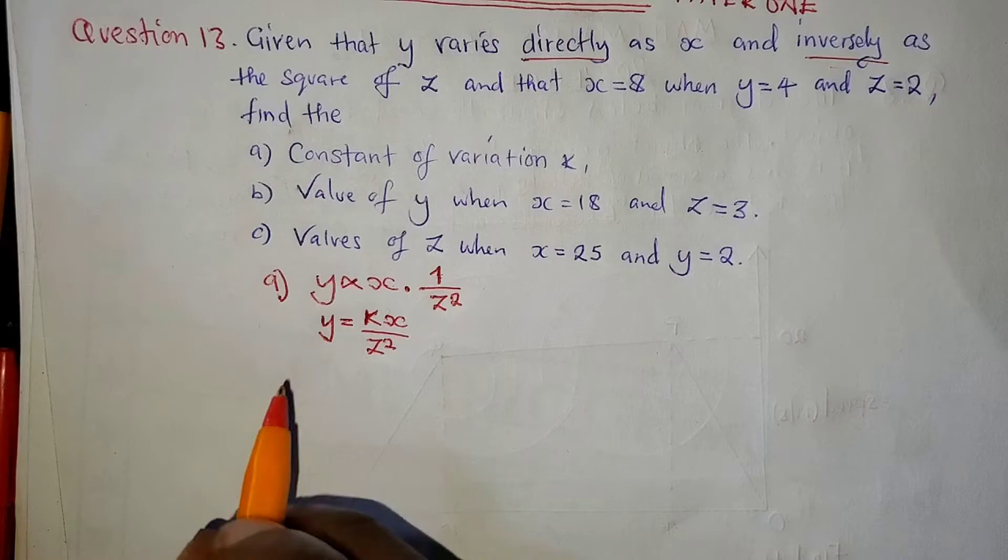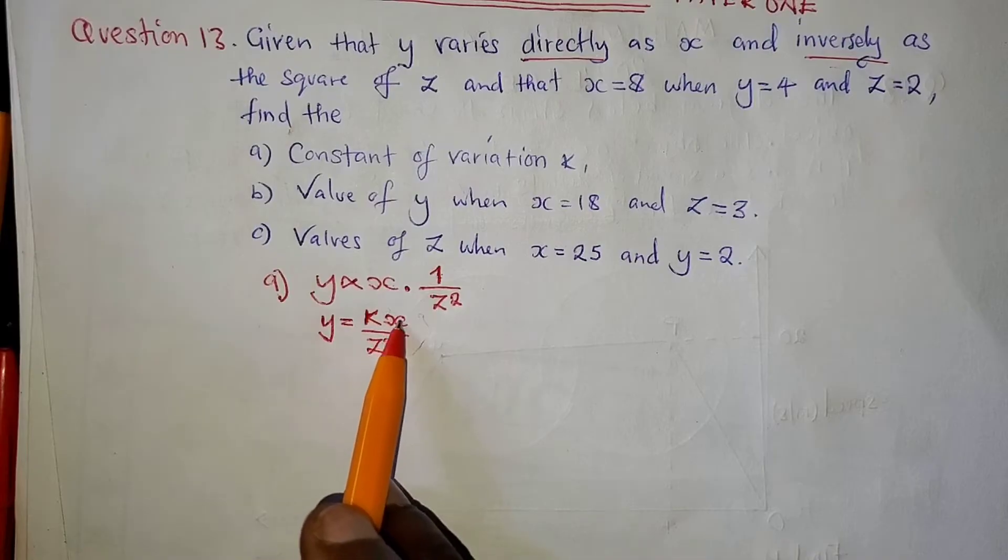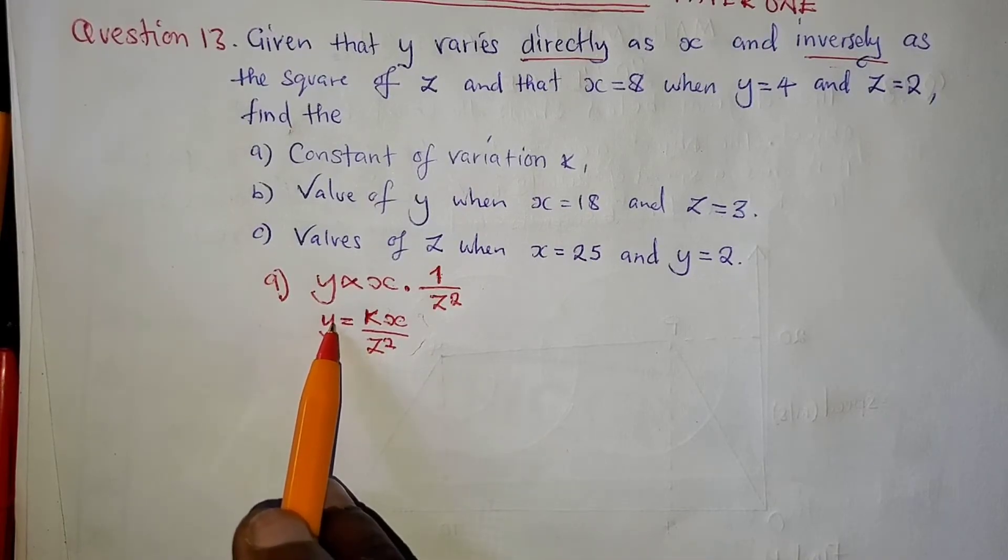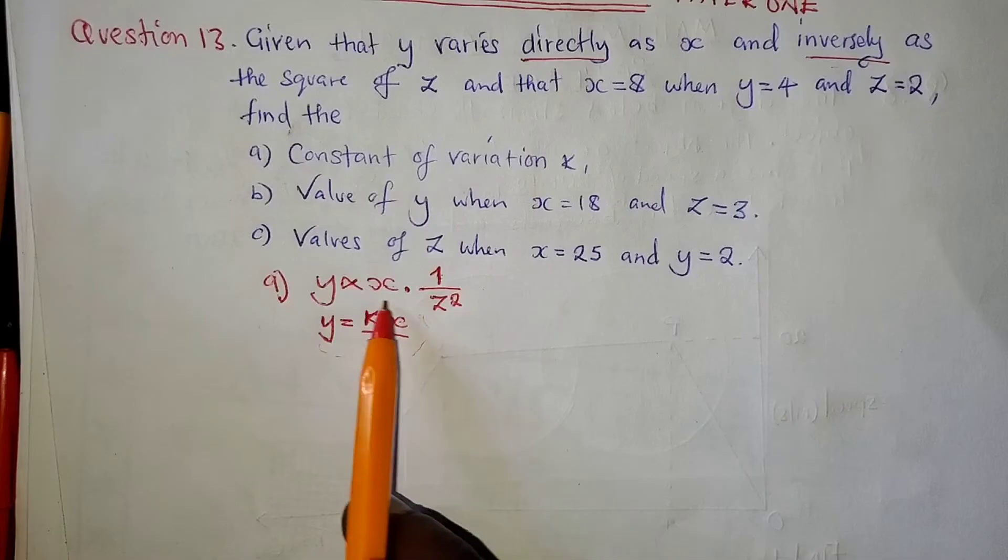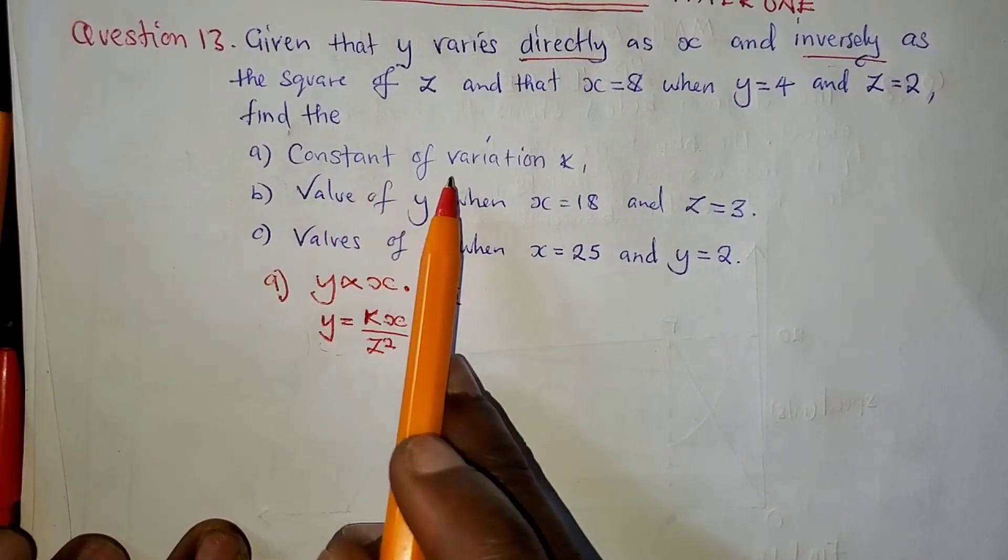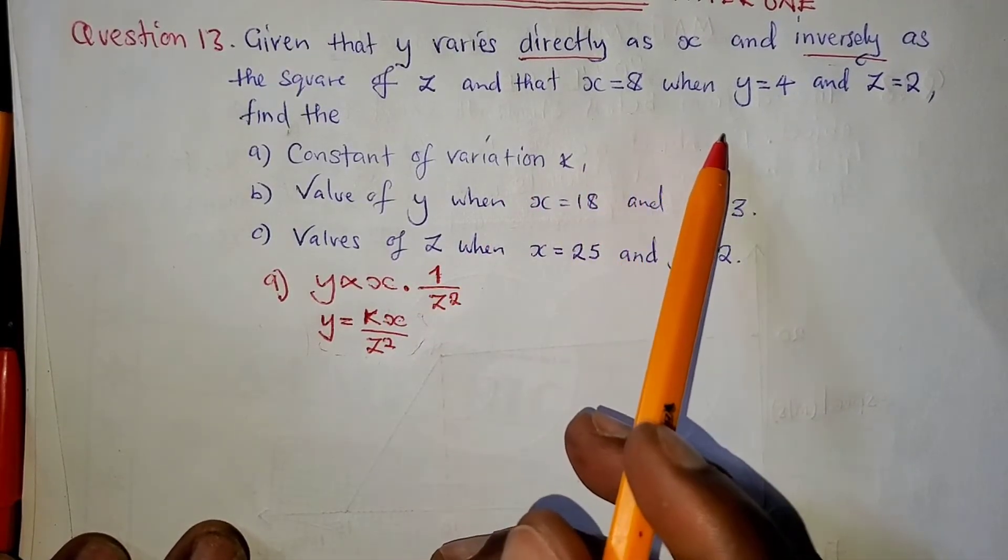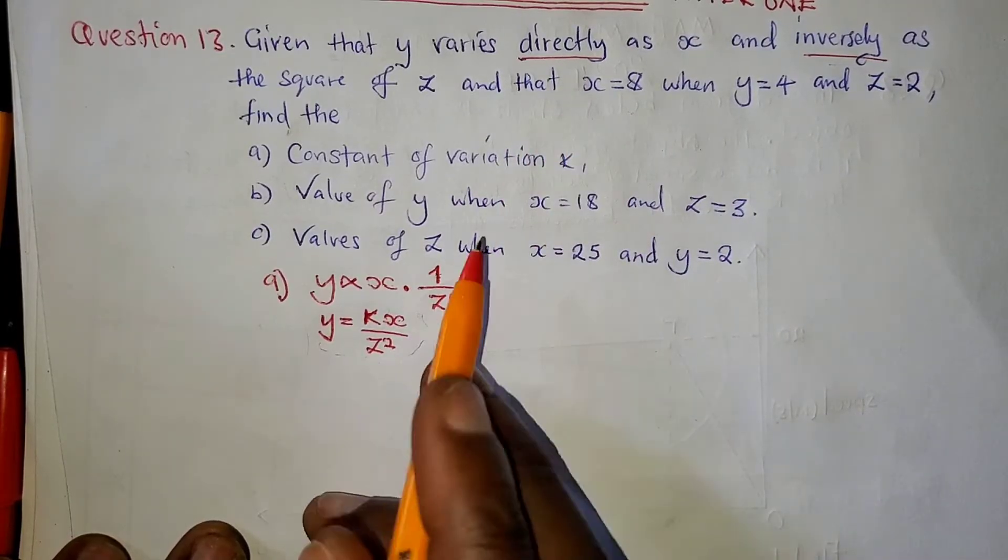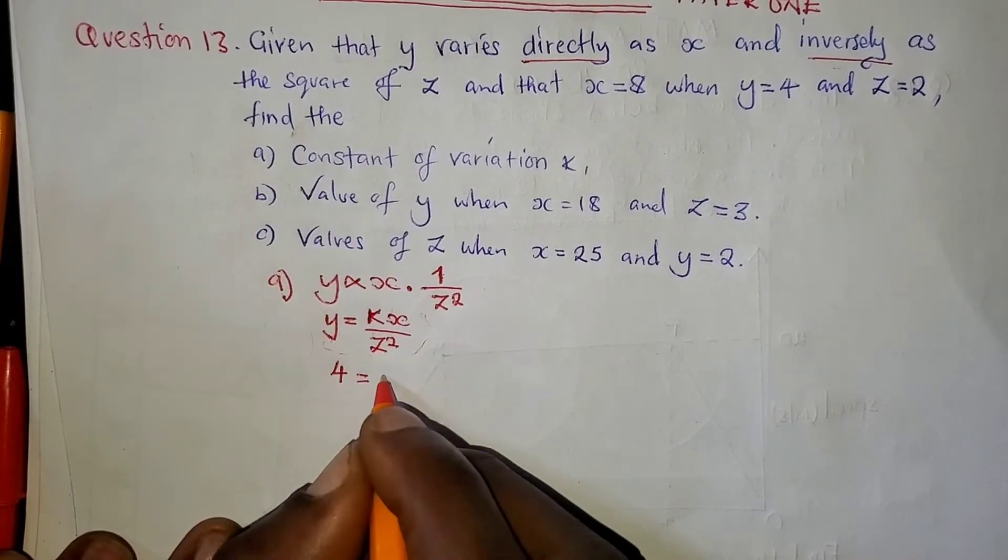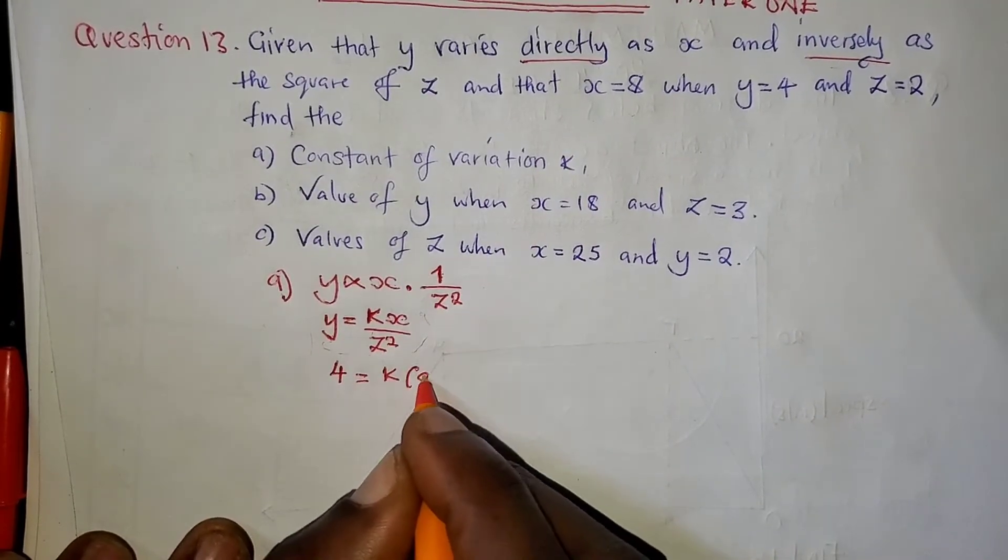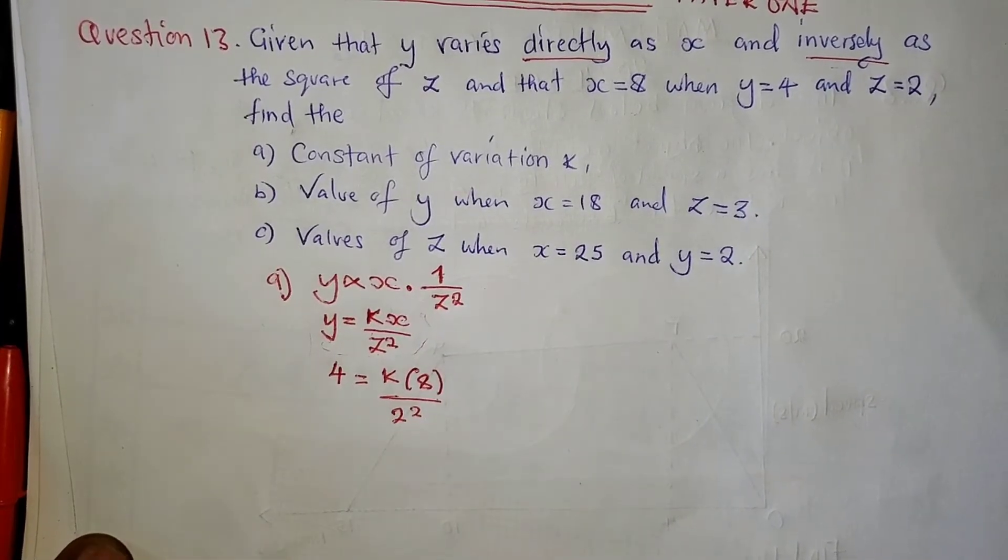The first question, we are asked to find the constant of variation K. So, what you do is, let's substitute what you are given in the question here to solve for K. Y is 4, K we don't know, X is 8, so we are going to put 8 there, then Z is 2, which is 2 squared.